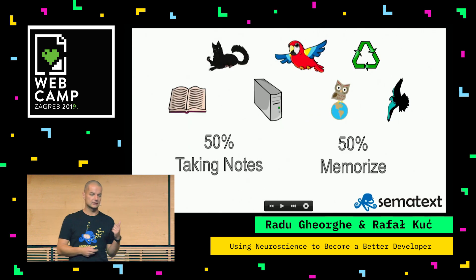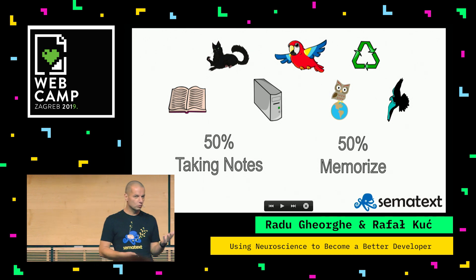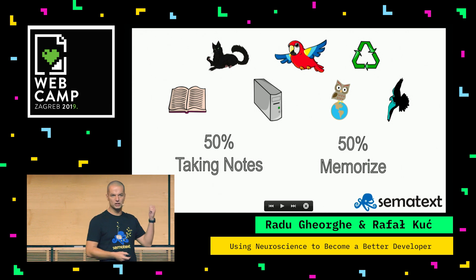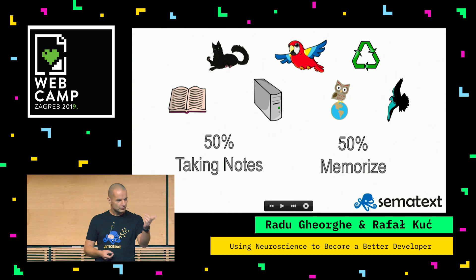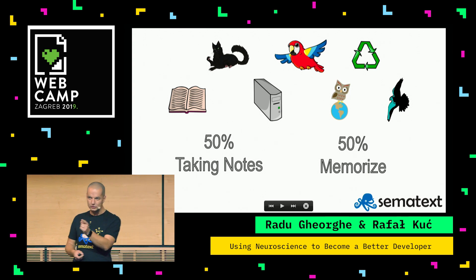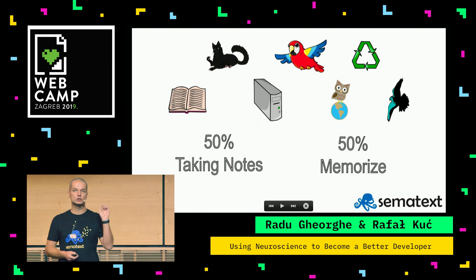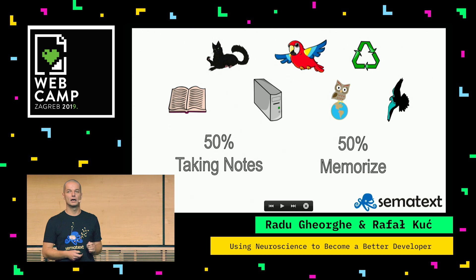The picture is like this: we have a book, we have a cat, we have a PC, a parrot, an owl on the earth, a recycle sign, and let's call it a hawk. Now let's take five seconds — try to memorize, try to write down the key parts. I'll get back to these pictures once again at the middle of the talk, and then I'll tell you why I asked you to do that.